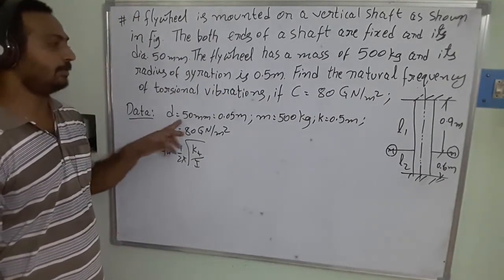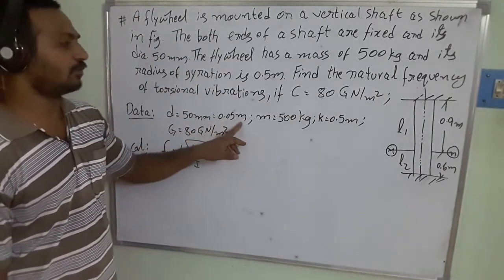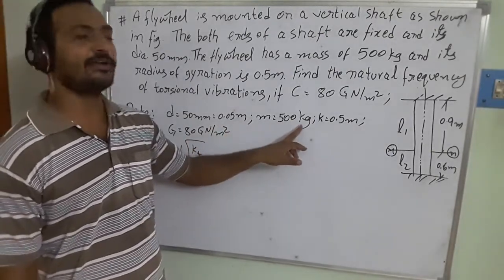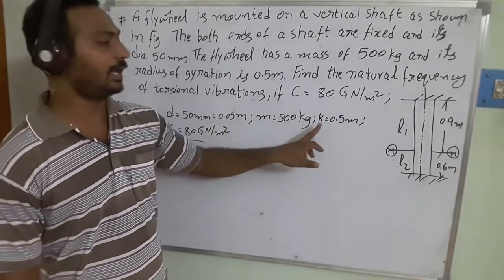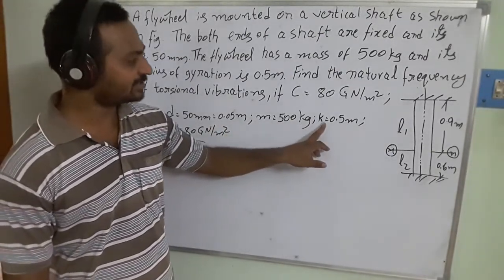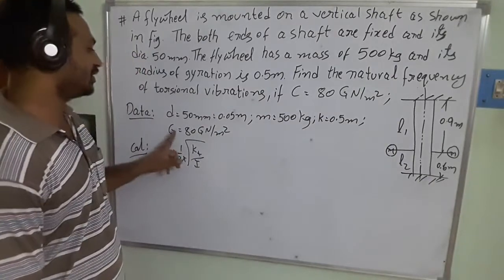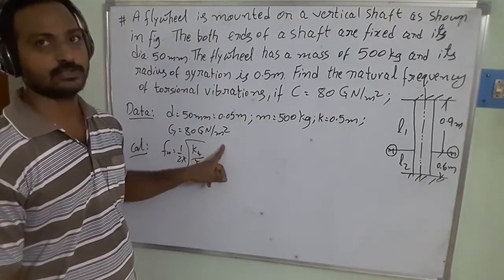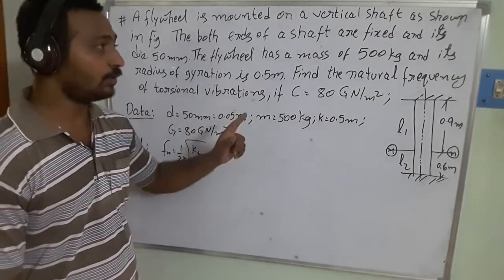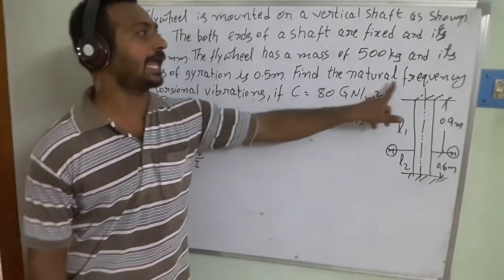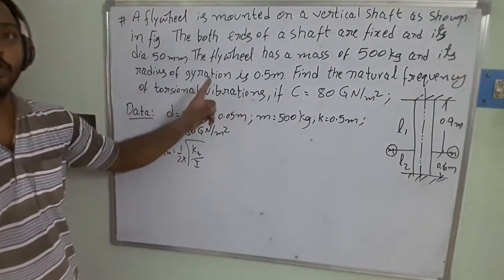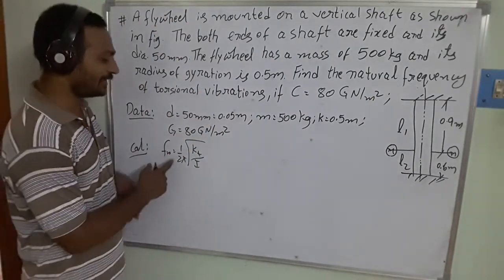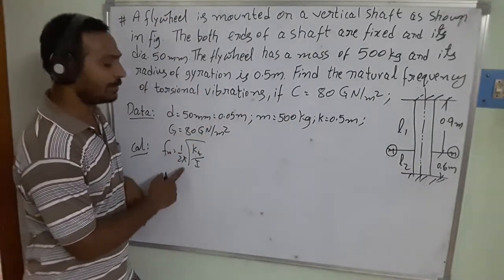The given data: diameter d = 0.05 m, mass m = 500 kg, radius of gyration = 0.5 m, and G = 80 GPa. We need to calculate the natural frequency fn = (1/2π) × √(kt / I) for this torsional vibration system.